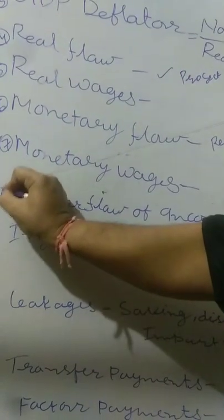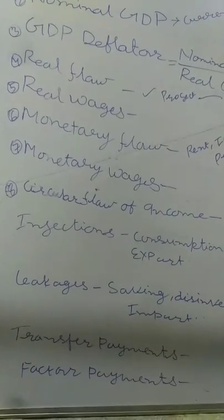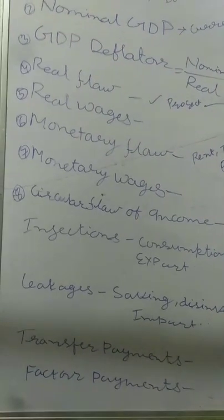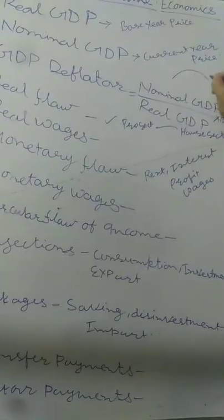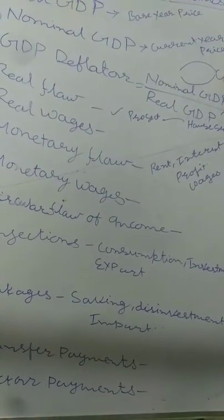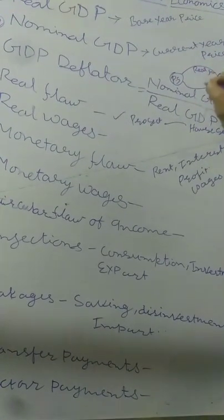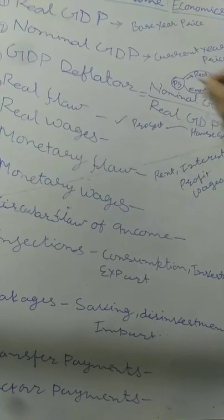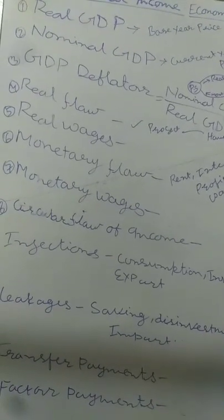The next topic is Circular Flow of Income. In a two-sector economy, one side is the production sector and the other is the household sector. The opposite flows of real flow and monetary flow together make a circular flow, and that is known as the circular flow of income.